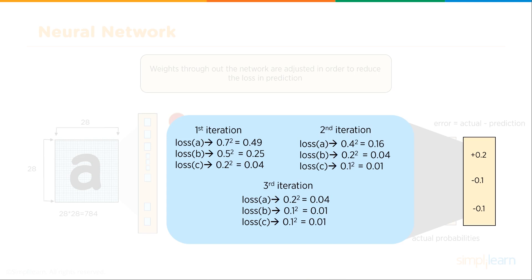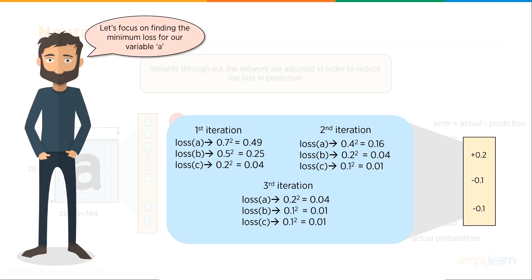Weights throughout the network are adjusted in order to reduce the loss in prediction. We do that by doing a second iteration coming through with our different losses. Then weights throughout the network are adjusted again. We do a third iteration. We just keep doing these iterations going back until we get the right value. When we're doing a reverse propagation, we're not looking at just one letter A, we're looking at hundreds of letter As.